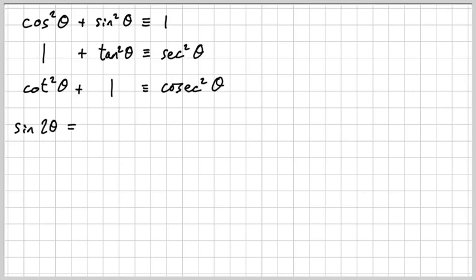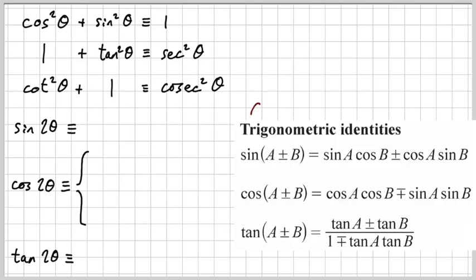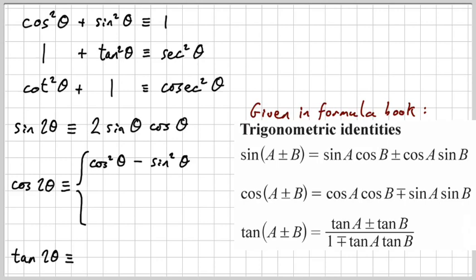You also need to know the double angle formulae. Now these are derived from something you get in the formula book, which is those things there on the right. But again, you don't want to be working these out every time from the formula book. You really just need to know these. I highly recommend committing these to memory as well. Of course, to work them out, you use plus here, and you let a and b both equal theta. So you get sin of 2 theta. And if you substitute everything over there on the right, you get 2 sin theta cos theta there. If you do the same for the cos compound angle formula, you get cos squared theta minus sin squared theta. And if you do the same for tan, you get that one there.